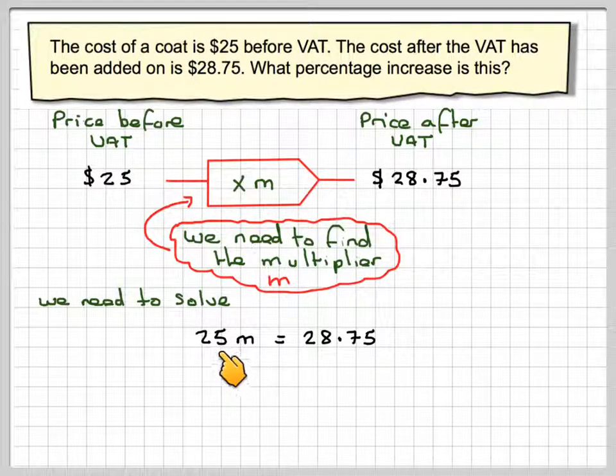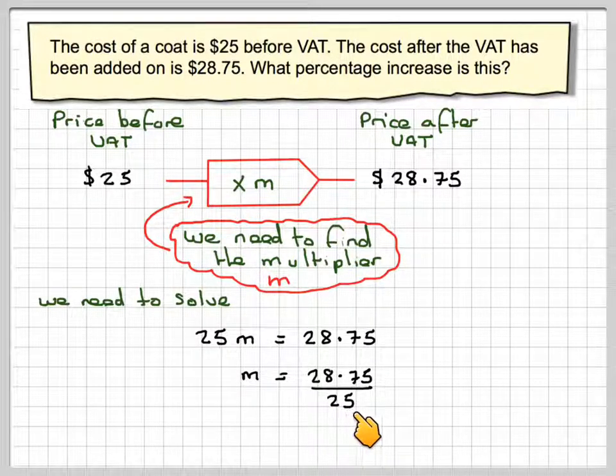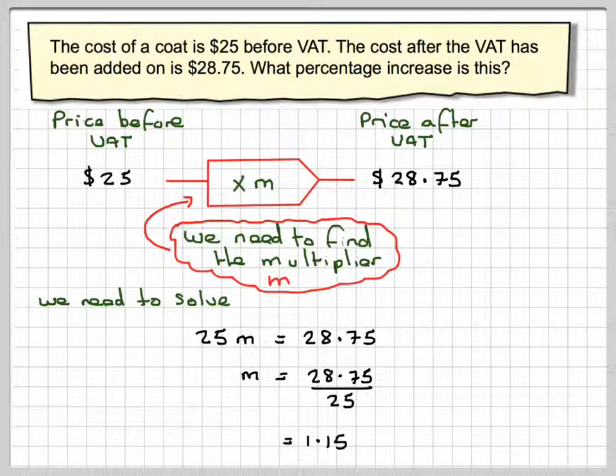Now in order to get M on its own we would need to divide by $25. So M will be $28.75 divided by $25, which gives me a multiplier of 1.15. Now what does that mean in terms of percentages?